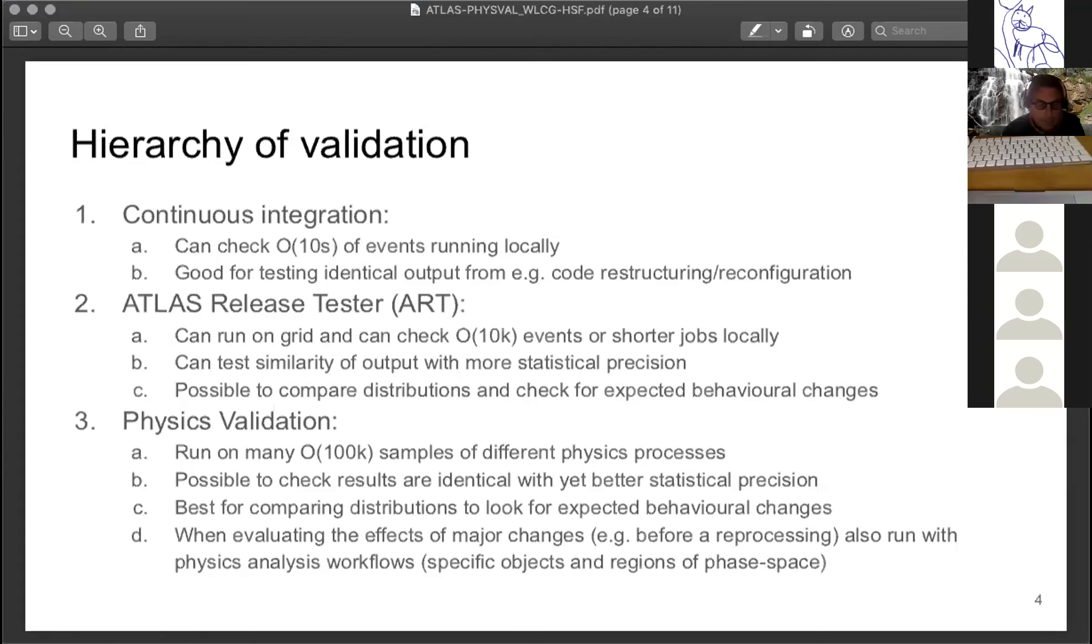Finally, physics validation, which we run usually on order of 100,000 events for different physics processes, provides much higher statistical precision and an overview of the effects of developments. It's much more statistics than the other two and ideal for comparing distributions.